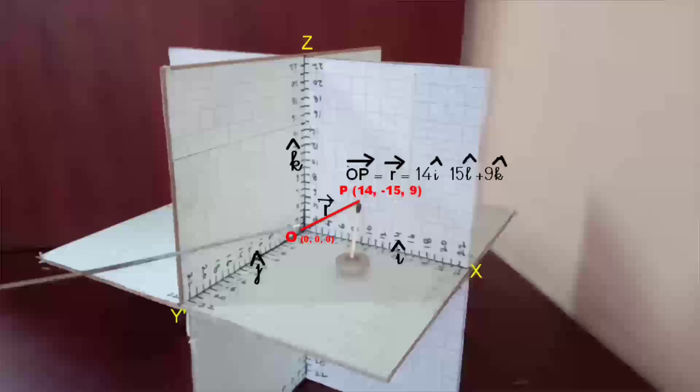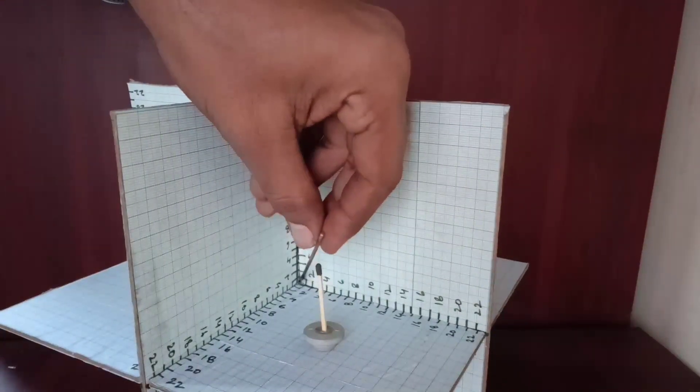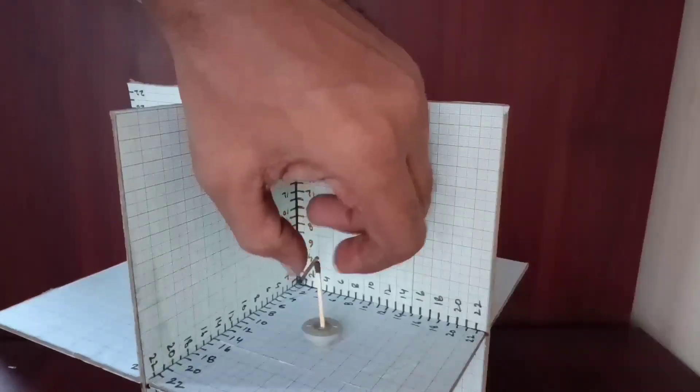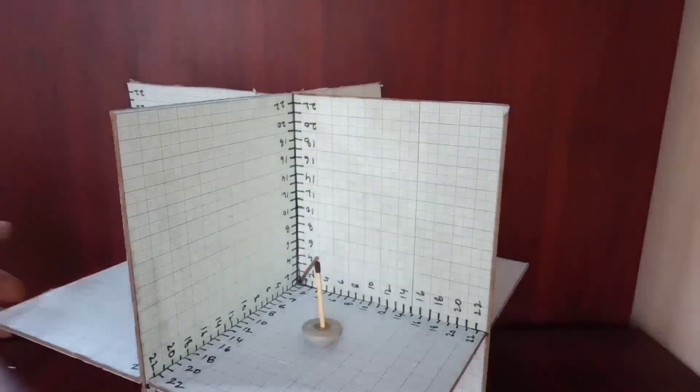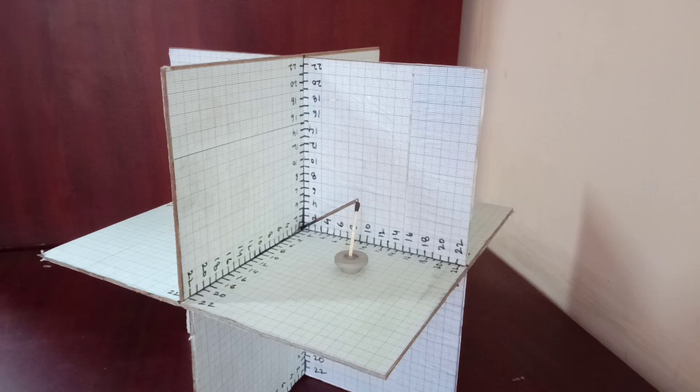Line from origin O to the point P represents the position vector OP. That is 14i cap minus 15j cap plus 9k cap, where i, j, and k are the directions of x, y, and z axis.